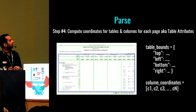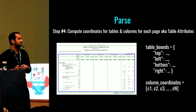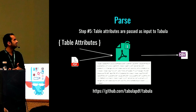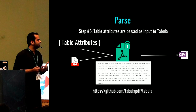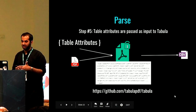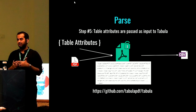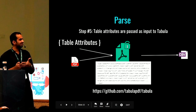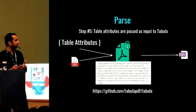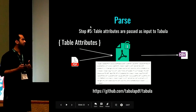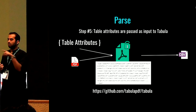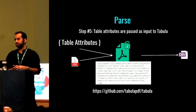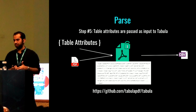Next, we compute the coordinates for tables and columns for each page — called table attributes: top, left, bottom, right — and then the column coordinates extracted from the previous step as C1, C2, C3, and so on. This is passed to a popular library called Tabula, which is very good at parsing PDFs but requires input from humans. So what we do is give it the boundary boxes and column coordinates, and it detects the cells. For each character in the PDF, we get information on top, left, height, width, and rotation. Tabula internally uses Apache PDFBox, a popular Java library to parse PDFs to XML.